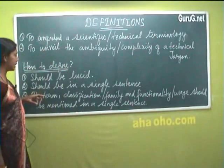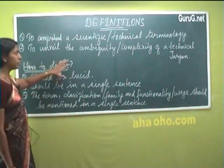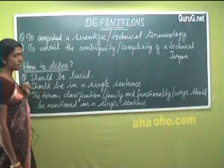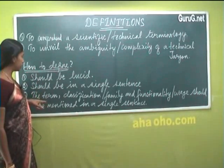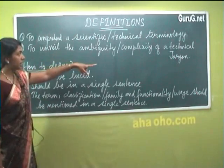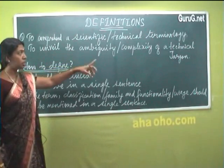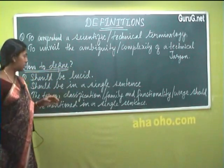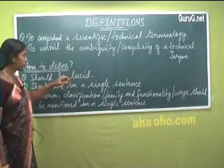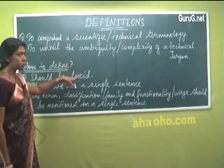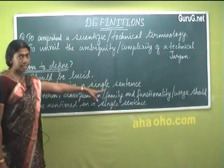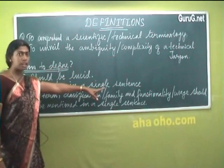Then how do we define these things? How to define the technical jargon? These are the answers. One, how to define? We are defining a technical jargon to simplify it, so it should be lucid. It should be simple. The definition should be simple. It should be in a single sentence, which is very essential.